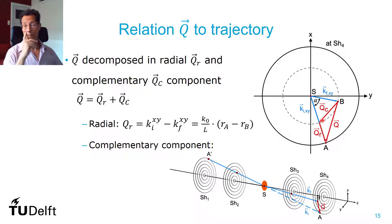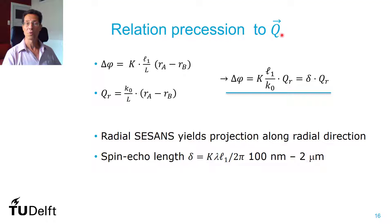So now, we can relate the precession to the wave vector transfer. And then it turns out that again, the precession is proportional to a spin echo length and only the radial part of the wave vector transfer. We don't see the other one. So in a way mathematically, it's completely equivalent to linear SESANS.